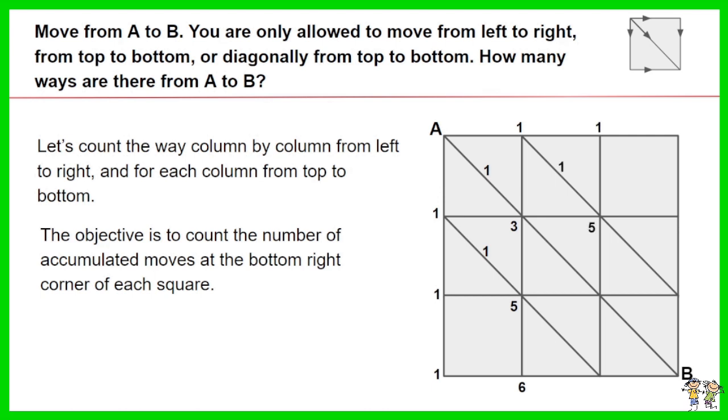For the top square of the middle column. The accumulated moves at the bottom right corner is 5, as it includes the 3 moves of the top square of the first column.